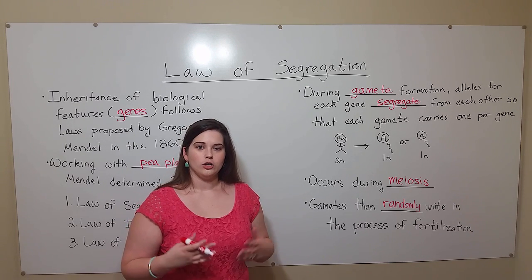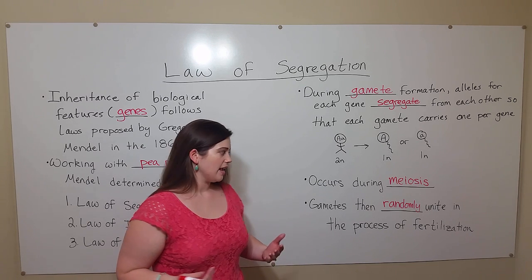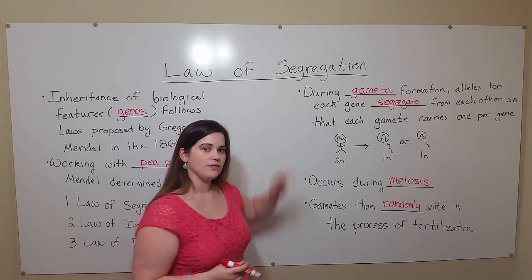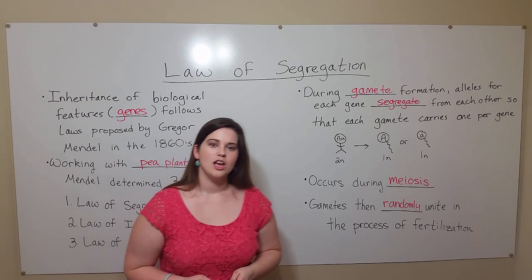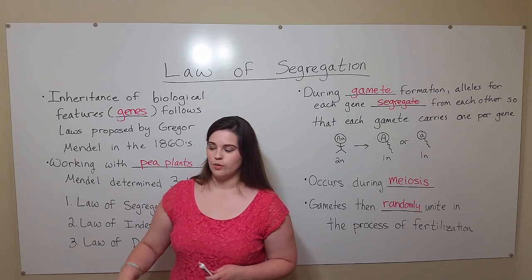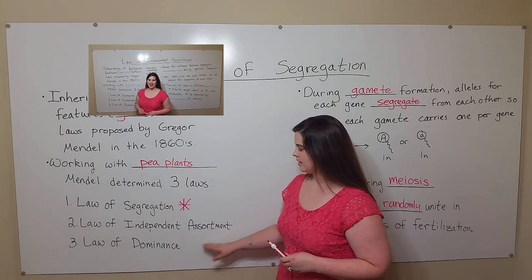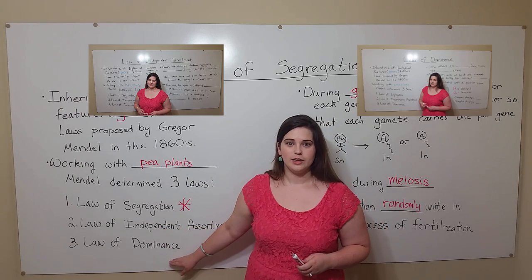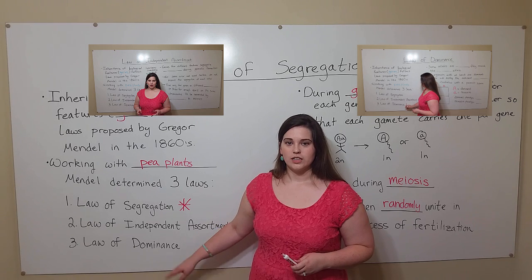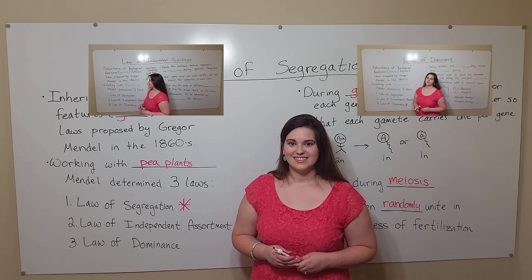This is why no two people are alike, no two siblings are alike — and it all has to do with the law of segregation. Thanks for watching. Remember my other two videos on the law of independent assortment and the law of dominance if you're interested in learning more, and we'll see you here at Biology Professor next time.